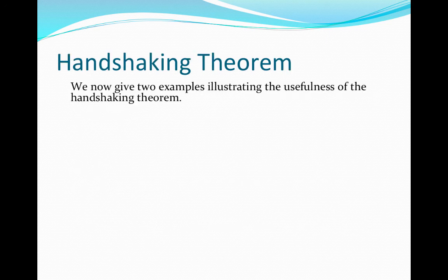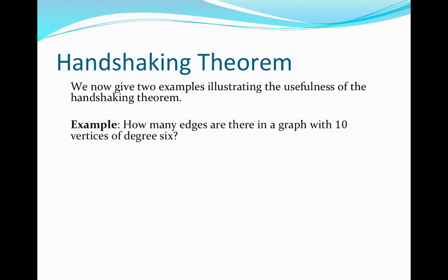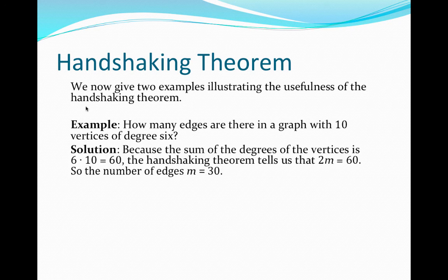Okay, so how do we apply this handshaking theorem, and why is it important? So we're going to give two different examples. Example one: How many edges are there in a graph with 10 vertices of degree 6? So since we know that there are 10 vertices in our graph, each of degree 6, we can determine the sum of the degrees of all of these vertices, and that is simply equal to the total number of vertices multiplied by their degree. So 10 times 6 gives us 60.